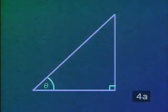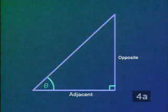You may recall that in any right triangle containing an angle theta, the sides of the triangle can be labeled as opposite or adjacent relative to angle theta. The longest side, the side opposite the right angle, is called the hypotenuse.